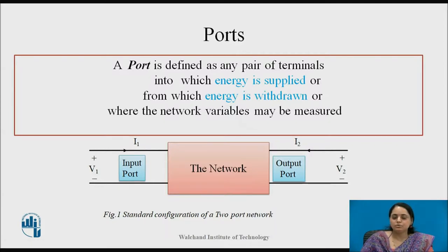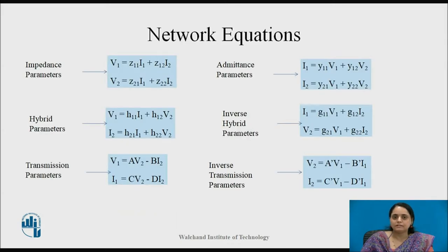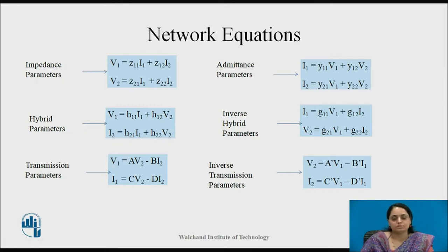Taking two of these network variables at a time and considering the rest as independent variables, six different types of network equations can be formed. These equations can be used to find impedance, admittance, hybrid parameters, inverse hybrid parameters, transmission parameters, and inverse transmission parameters.